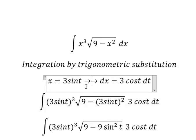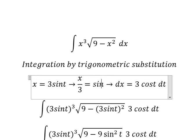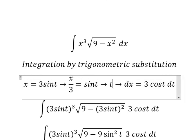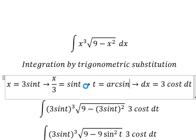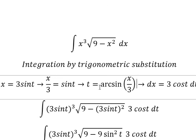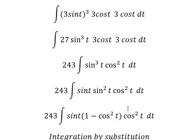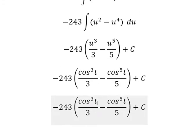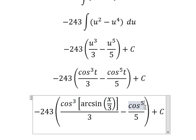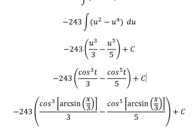We divide both sides by 3 and find the value of t. Now we need to back-substitute t in terms of the original variable. This is the end. Thank you for watching.